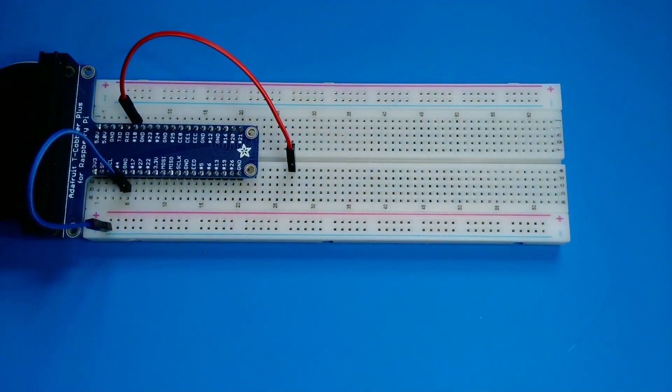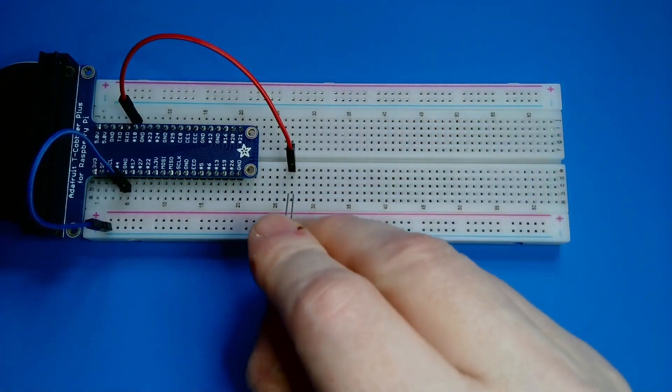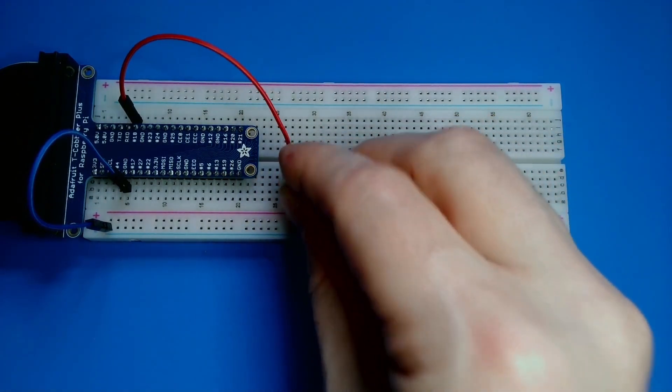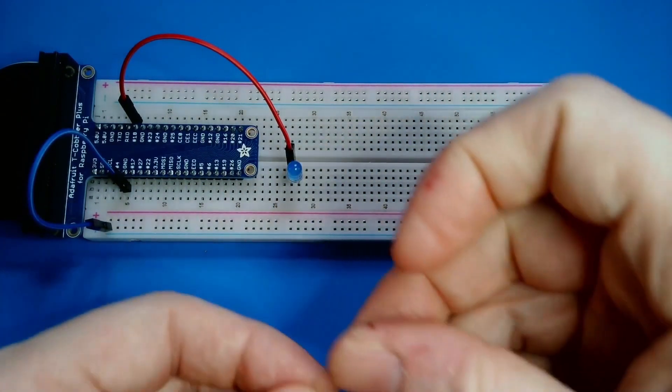On that same row, I'll connect the longer of the LED's two legs. This is the positive input on the LED, called the cathode. I'll arrange the LED so that the shorter negative leg, called the anode, is inserted into the neighboring empty row.